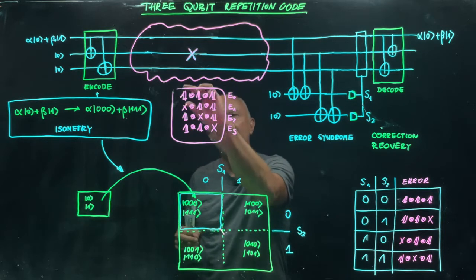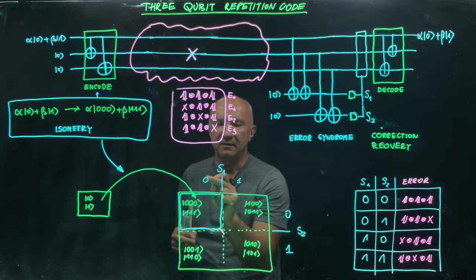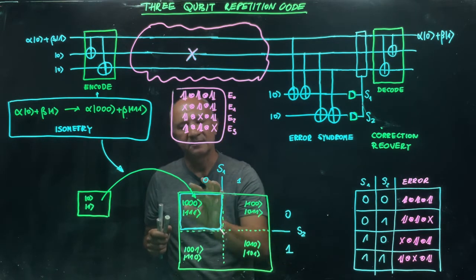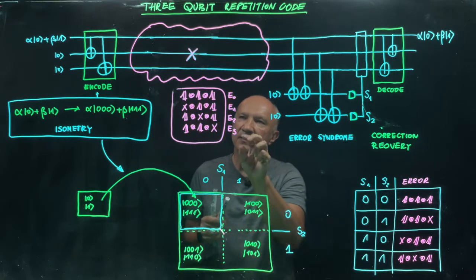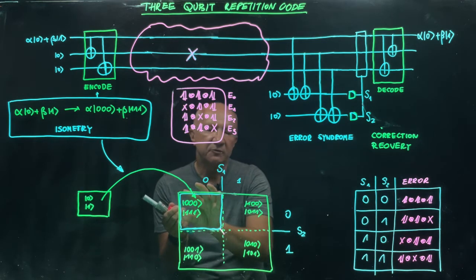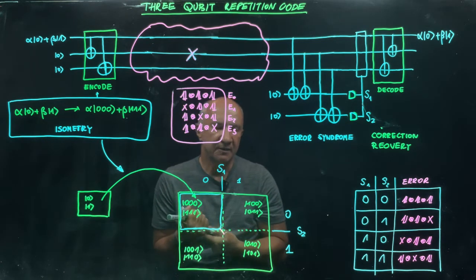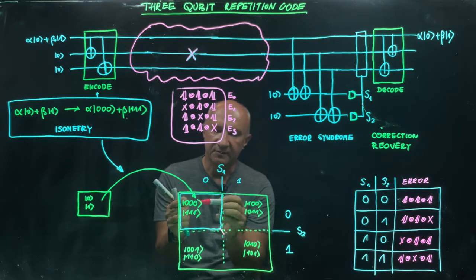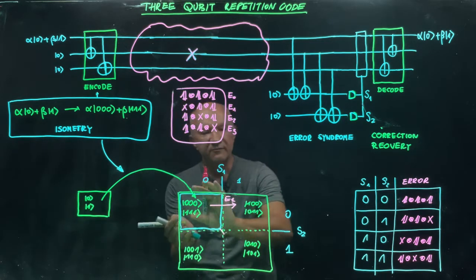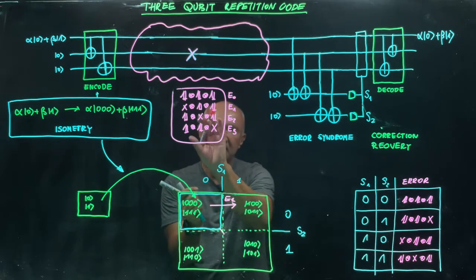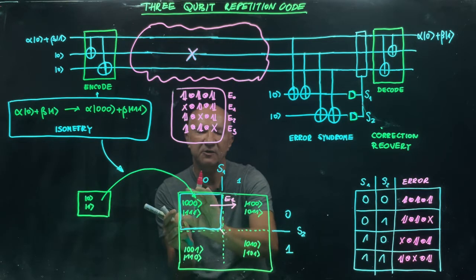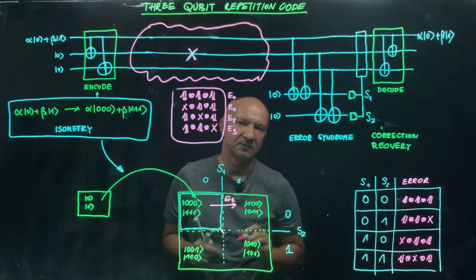Let's look at how those errors modify the code subspace. E0 doesn't do anything to the code subspace — the whole subspace is intact. E1, which is a bit flip on the first qubit, takes the whole code subspace and moves it to an orthogonal subspace spanned by vectors |1,0,0> and |0,1,1>. The result of E1 is shifting the whole subspace without modifying it — it is a unitary operation that, when restricted to inputs from the code space, shifts the entire code space to a subspace orthogonal to it.